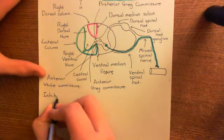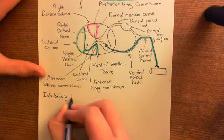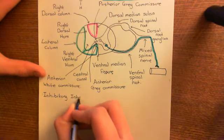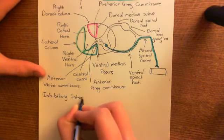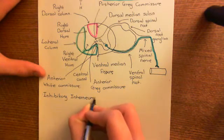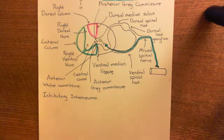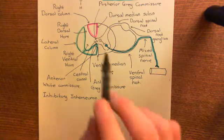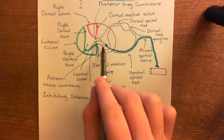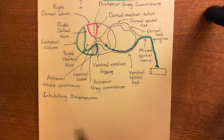These inhibitory interneurons are going to synapse with the alpha motor neurons and make it less likely that the alpha motor neurons will fire an action potential. They achieve this by releasing glycine onto the alpha motor neuron.